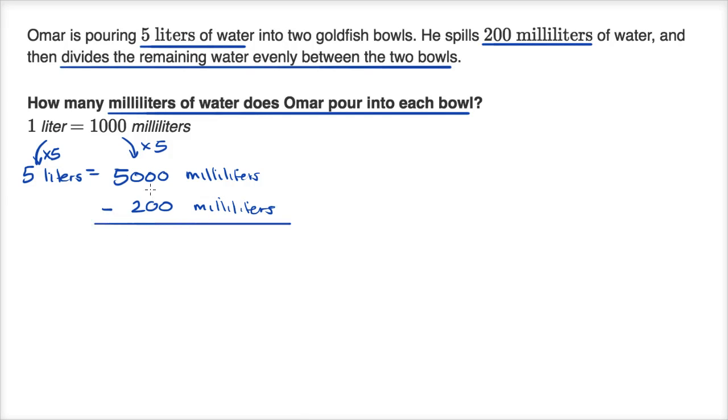That's going to give us 4,800 milliliters to split between those two bowls. And so each bowl, that's what they're asking us, how many milliliters of water does he pour into each bowl? So if he's going to split this into two bowls, each bowl is going to get half of this. And so each bowl is going to get half of 4,800. So we just divide that by two. So each bowl is going to get 2,400 milliliters. That's how much Omar is going to pour into each bowl.